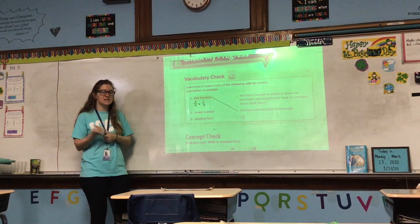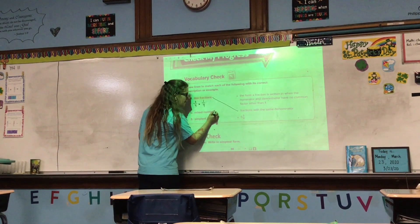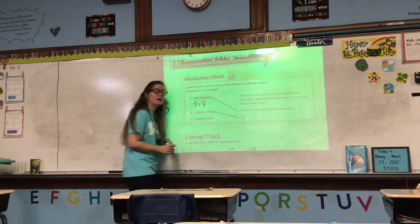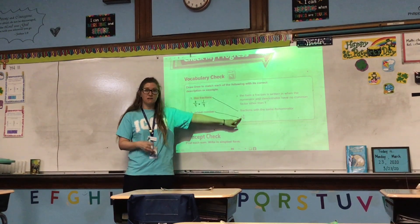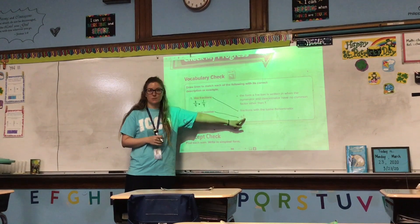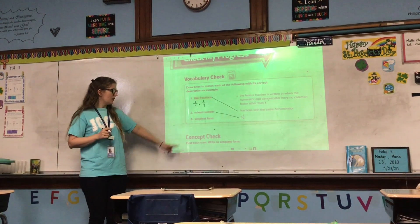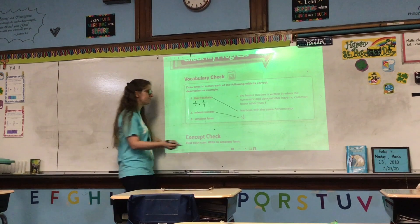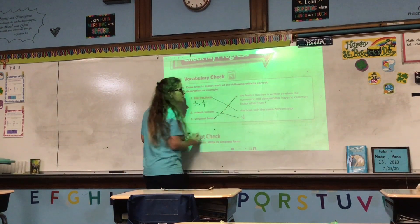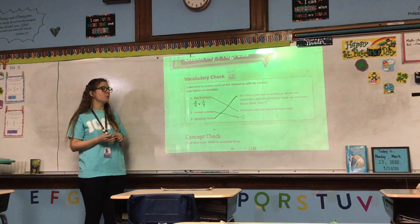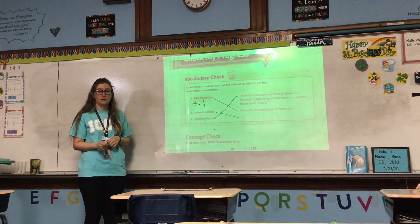Number 2: a mixed number. For this one, we have an example. 5 and 3 fourths is a mixed number because we have a whole number part, the 5, and we have a fraction part, the 3 fourths. Number 3: simplest form. Simplest form is the form a fraction is written in when the numerator and the denominator have no common factor other than 1.